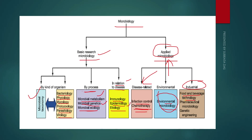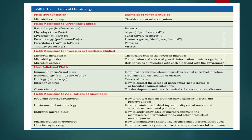Industrial microbiology is the most important area of applied microbiology. It includes food and beverage technology — many microorganisms are used to produce fermented foods and alcoholic beverages. It also studies pathogenic microorganisms that must be eliminated from foods. Pharmaceutical microbiology covers pharmaceutical products produced by microorganisms. Genetic engineering involves modifying genes to eliminate disease. These notes summarize microbial taxonomy and all related fields.